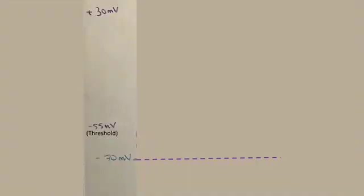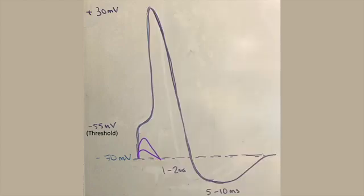The action potential is an all-or-none response. This means that once a neuron has reached an electrical threshold, an action potential will occur. If the threshold is not reached, an action potential will not occur.